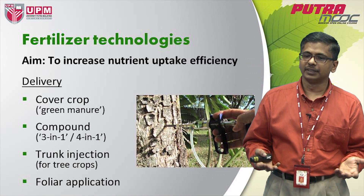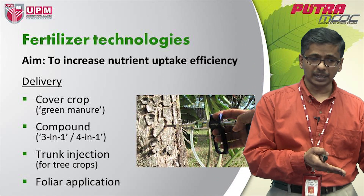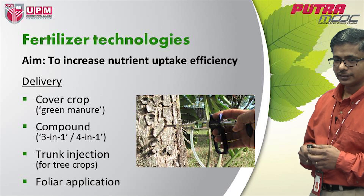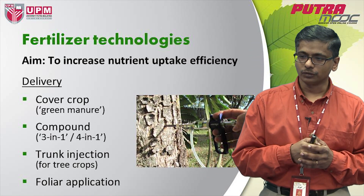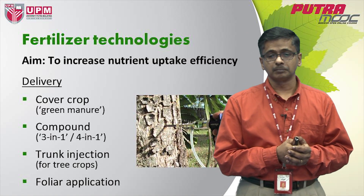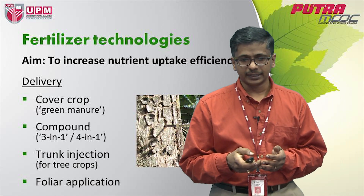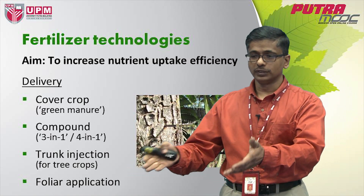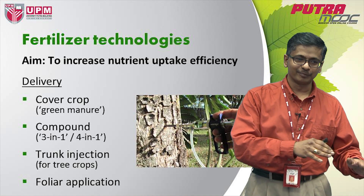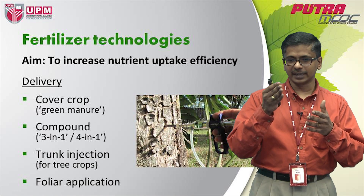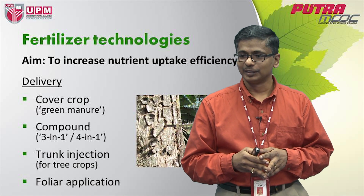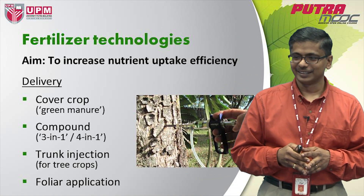We have trunk injection, which is a superior technique of delivering the nutrient to the plant. This example shows you a motorized syringe which has been used to bore a hole into the bark, and then nutrient is injected into the plant. This technique is far superior to the common technique of applying nutrients into the soil, simply because it reduces the journey of the nutrient from source to sink. By having it injected into the bark, it shortens that journey of the nutrient — it's like taking the highway instead of taking the trunk road.